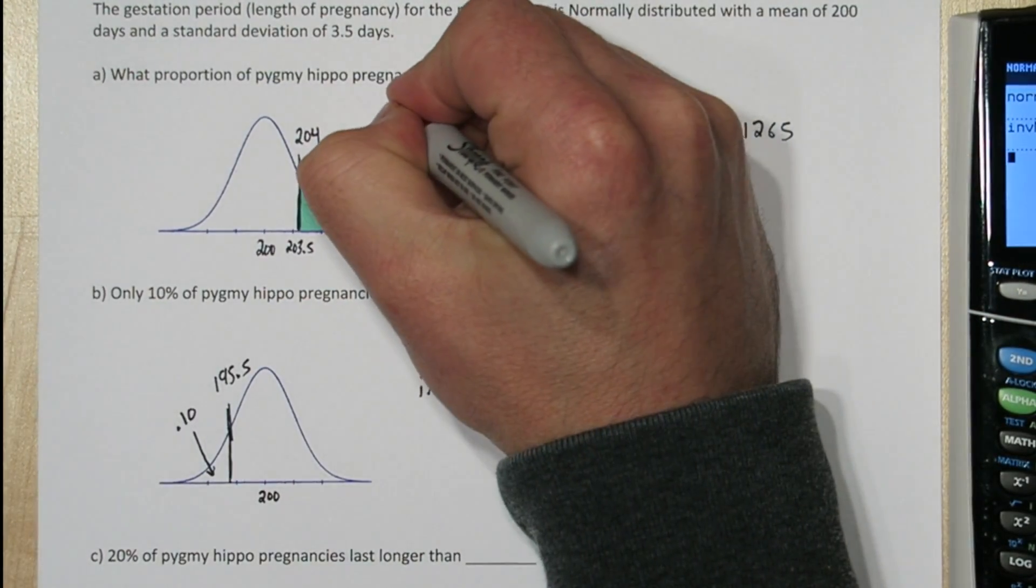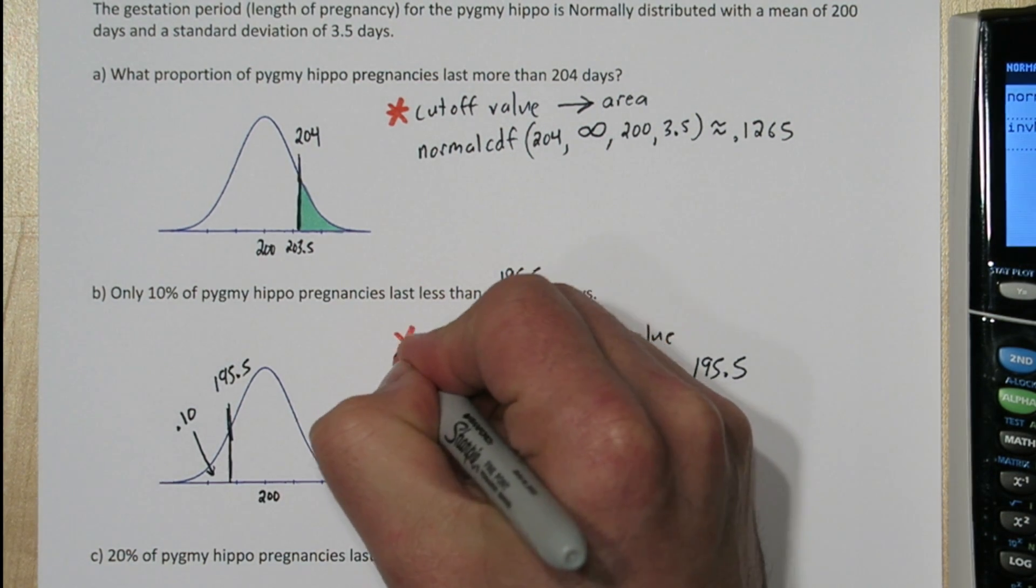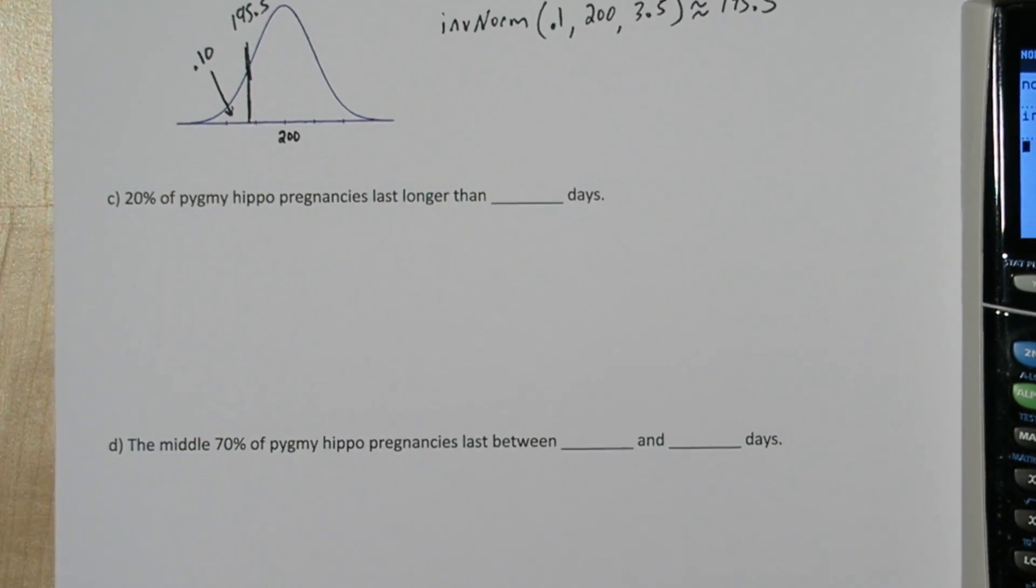So again, if we have the cutoff value and want the area, use normal CDF. But if you have the area, and you want the cutoff value, use inverse norm. So let's look at the next one.